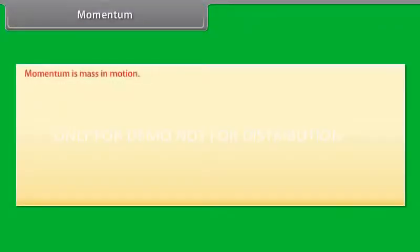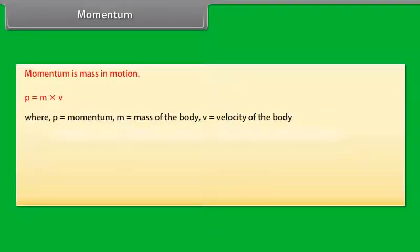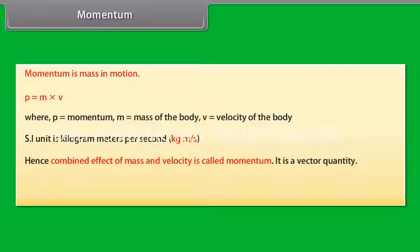Momentum is mass in motion. P = M × V, where P is equal to momentum, M is equal to mass of the body, V is equal to velocity of the body. SI unit is kilogram meters per second. Hence, momentum is the combined effect of mass and velocity.